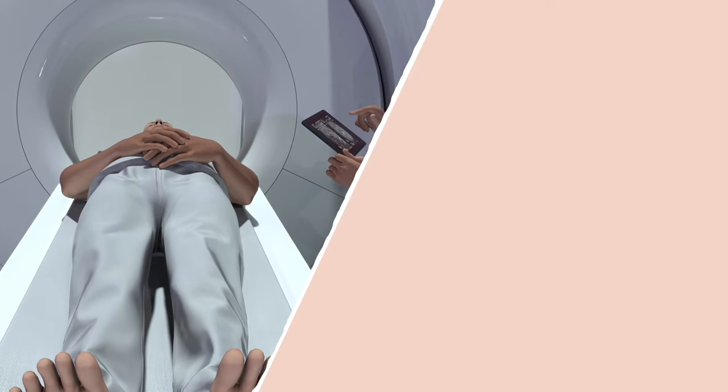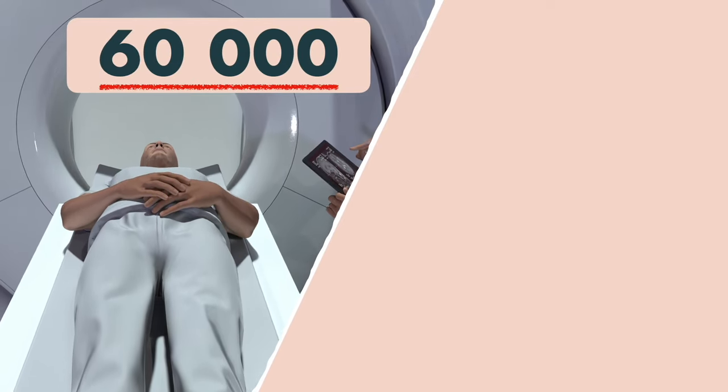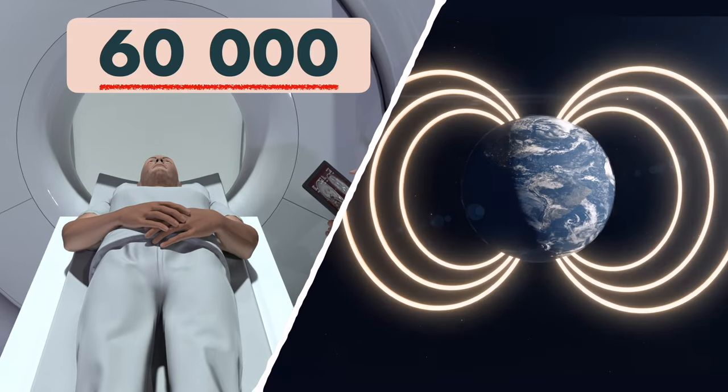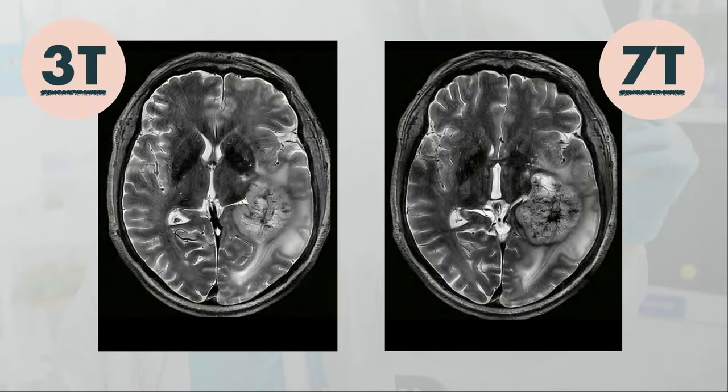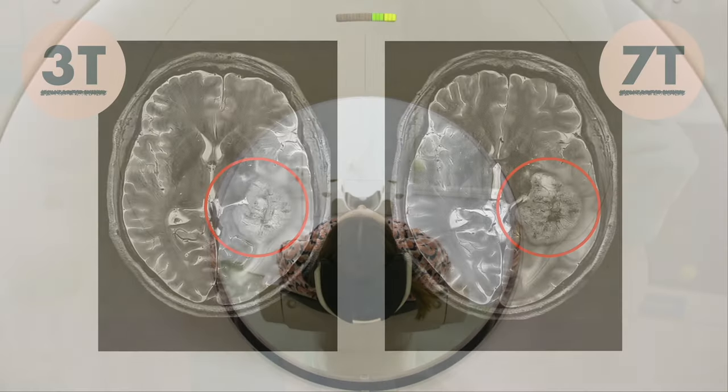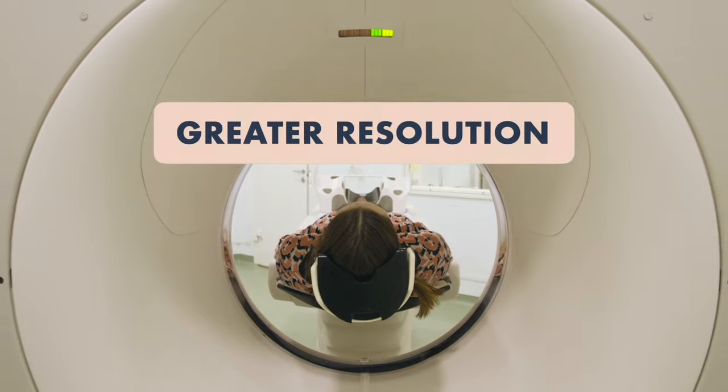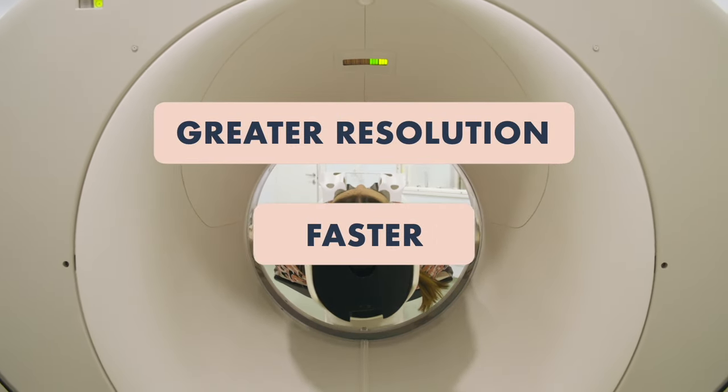Putting that into perspective, a 3 Tesla MRI scanner is around 60,000 times stronger than the Earth's magnetic field. The stronger the magnetic field, the more detailed the images become, which means the body can be imaged either at a greater resolution or at the same resolution but faster.